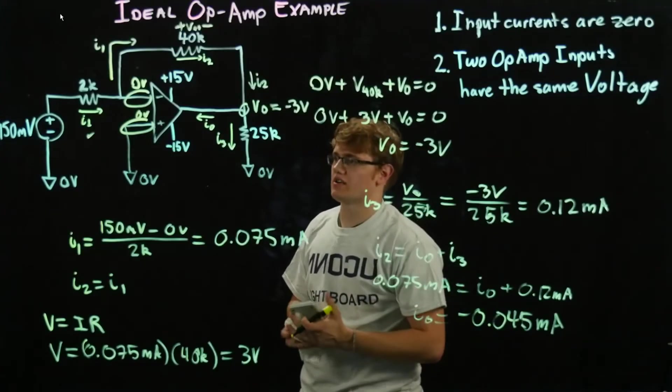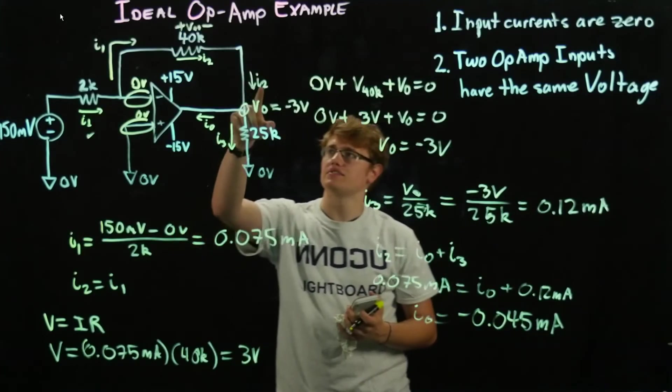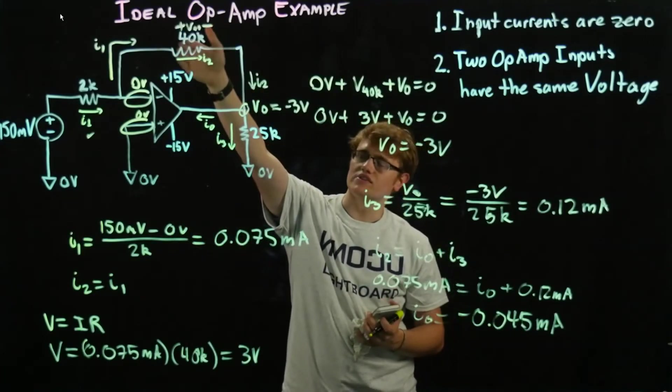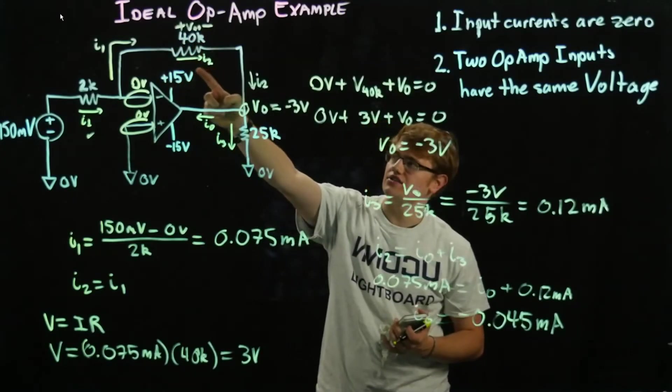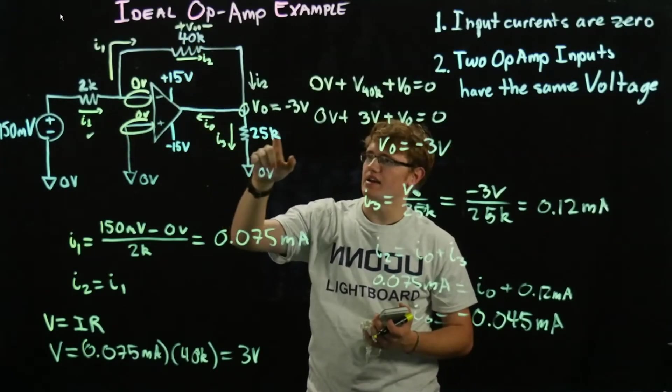So now we know all these values, we know I0, we know I3, I2, and then we know the voltage across this, it wasn't asked for, but we know I2, I1, and now we know VO.